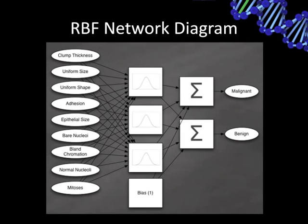If you wanted to use the RBF network for regression, you would have a single output. Notice there is also a bias, which is always a value of one. There are also two sets of weights: the weights between the inputs and the RBFs, and more weights between those and the summations.